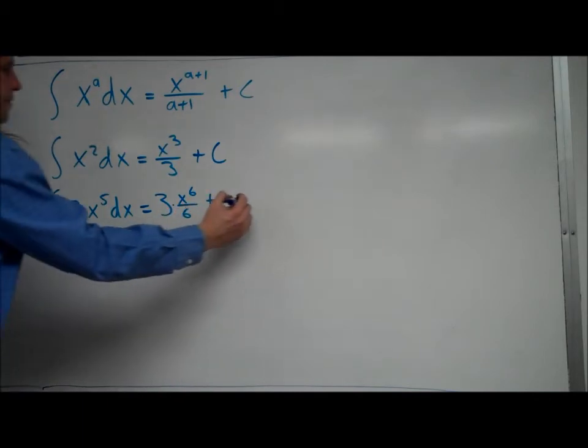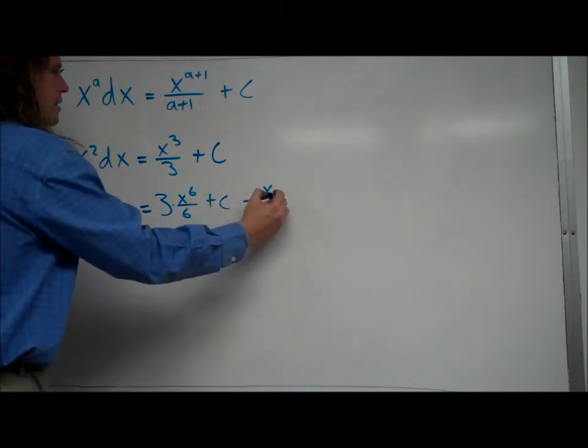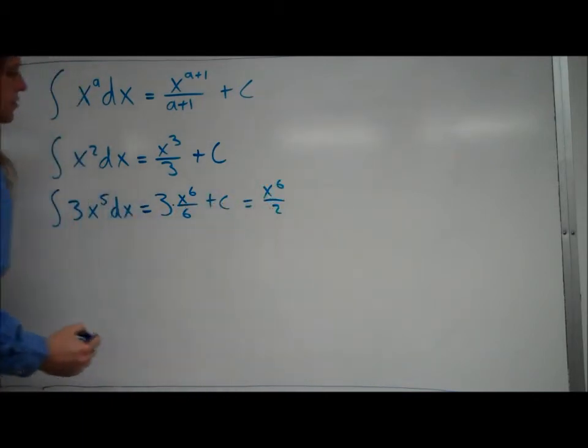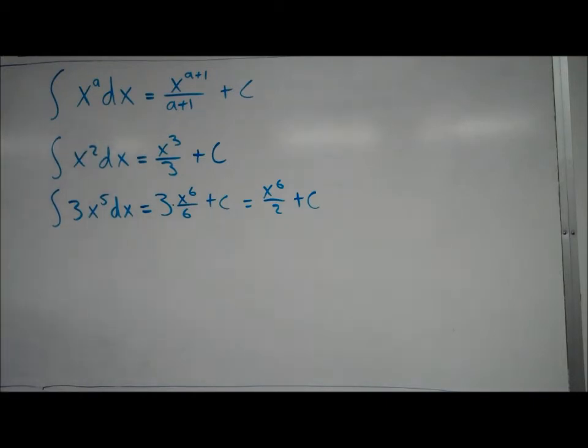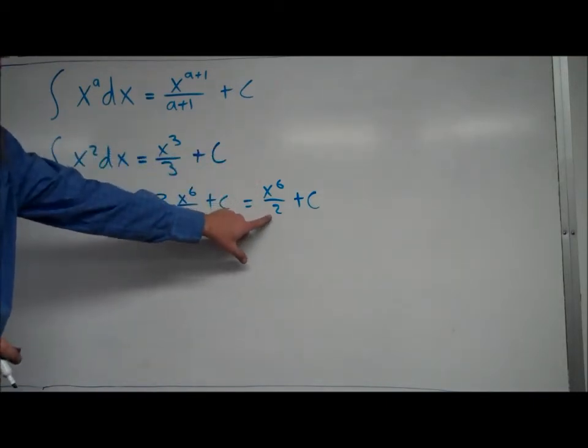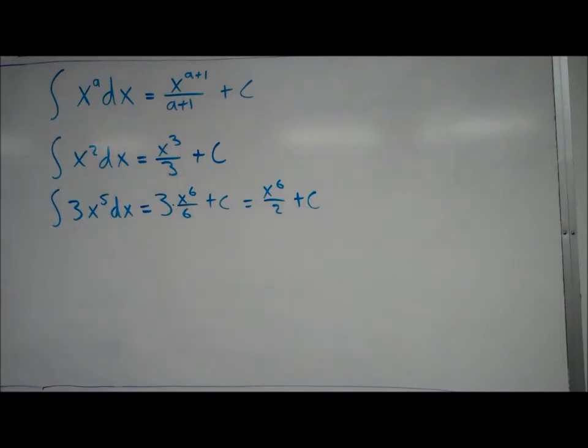now you could, of course, simplify that to just x to the 6th over 2, when you divide by 3 on the top and bottom, plus c. And make sure you've got your plus c, and you can see that when you do take the derivative of this, that would become 6x to the 5th over 2, which simplifies to 3x to the 5th, so it works out.